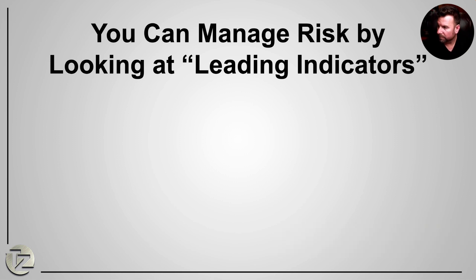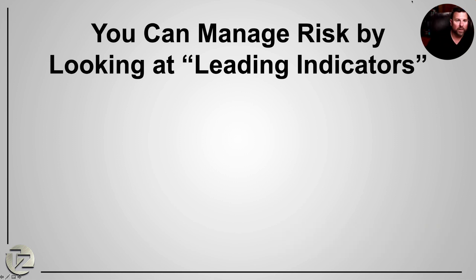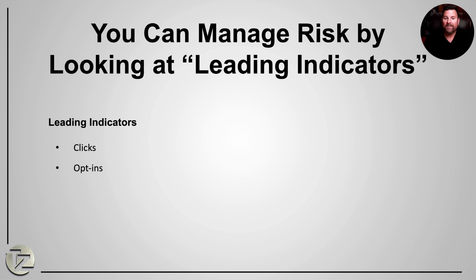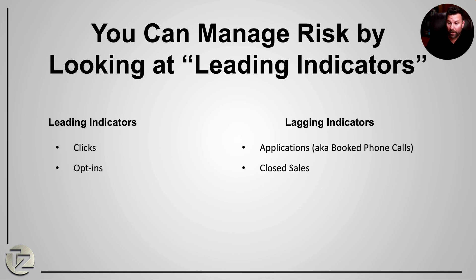When people worry about spending money on YouTube, they are only thinking about what I call lagging indicators. Leading indicators are what help us manage our risk. A leading indicator is something that happens early in the prospect's journey that we can measure inexpensively to determine whether we're on track to be profitable. A leading indicator is a click or an opt-in. Are clicks and opt-ins the most important metric? No — the most important metric is how much did it cost me to close a sale, to get a client. Cost per acquisition is far more important than cost per click or cost per opt-in.